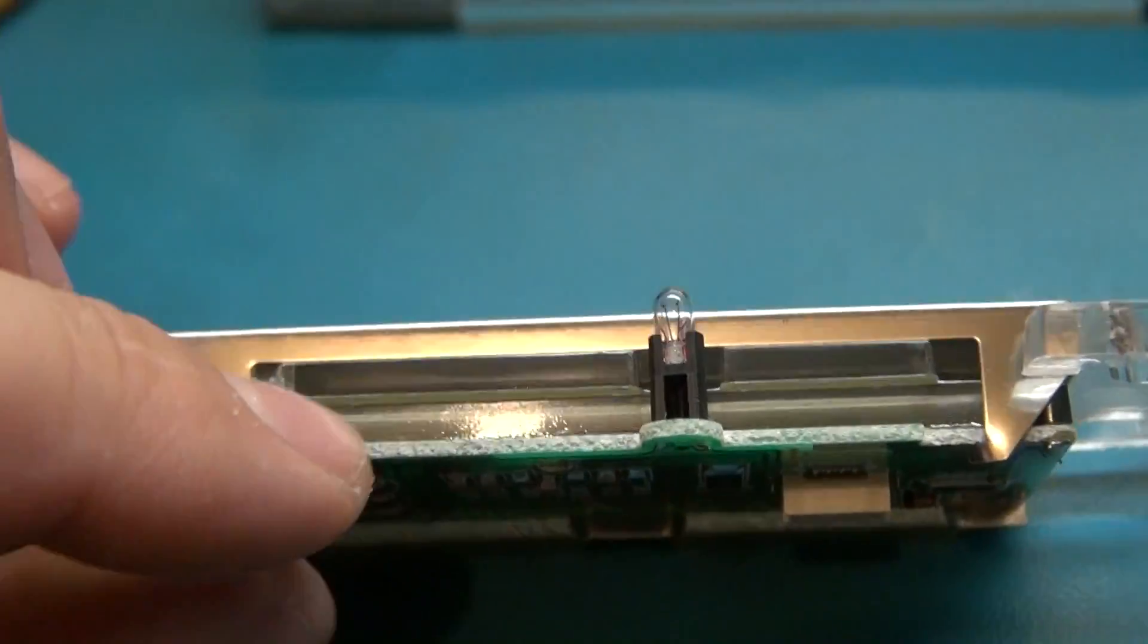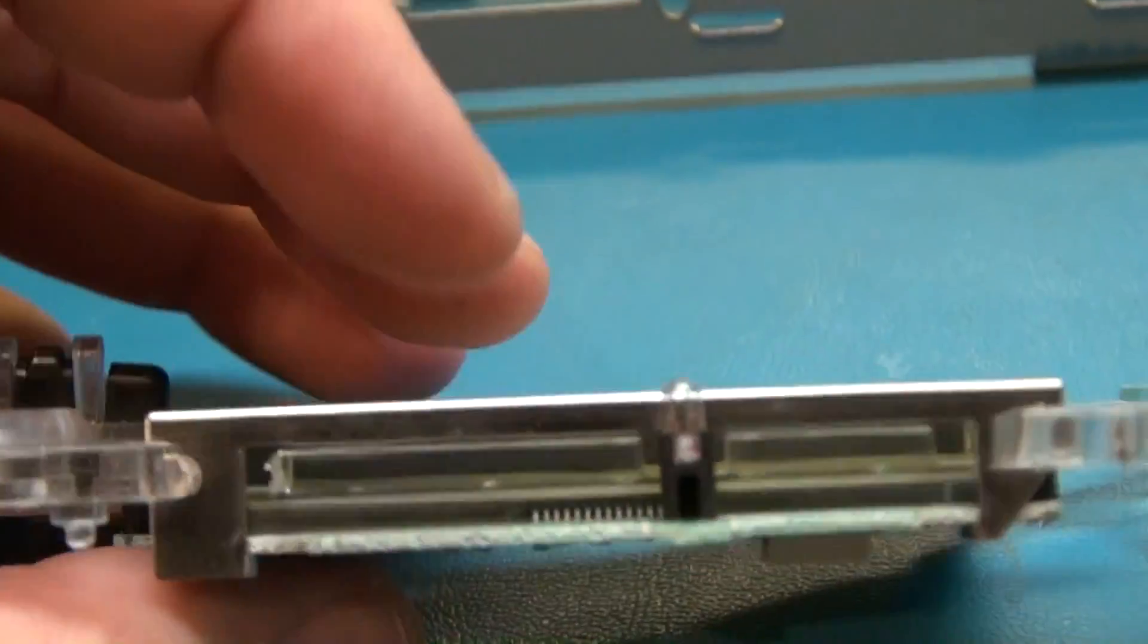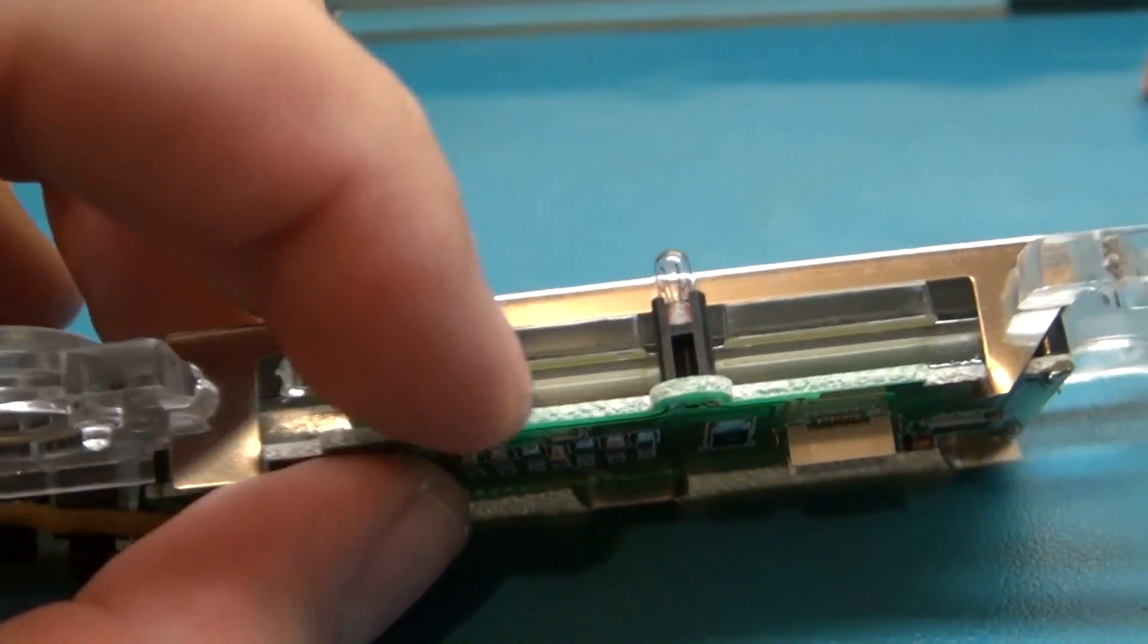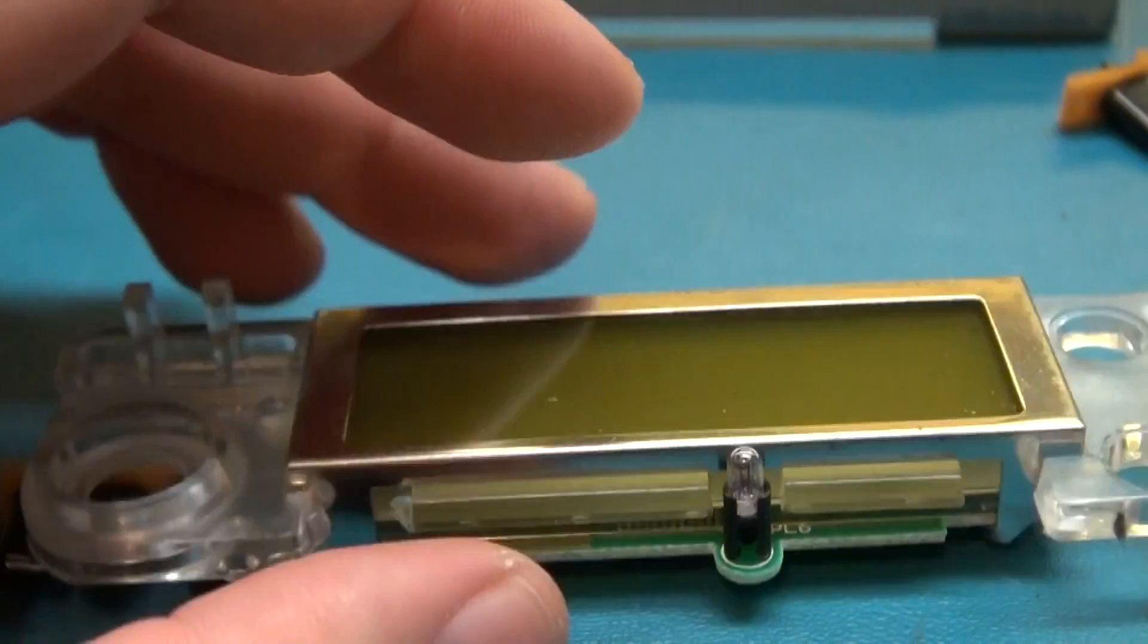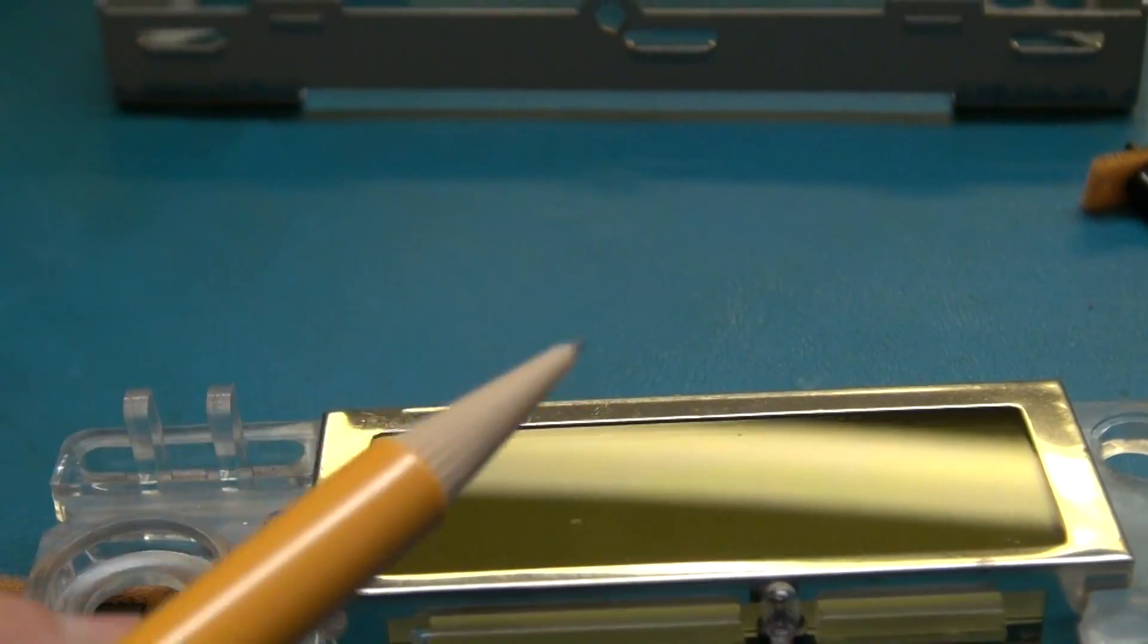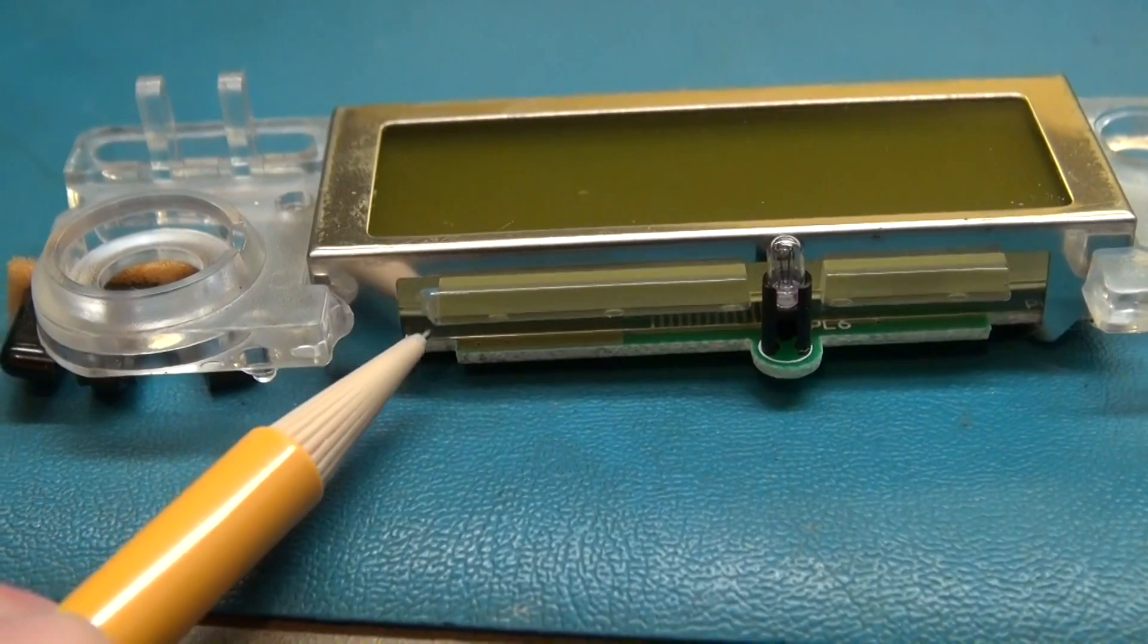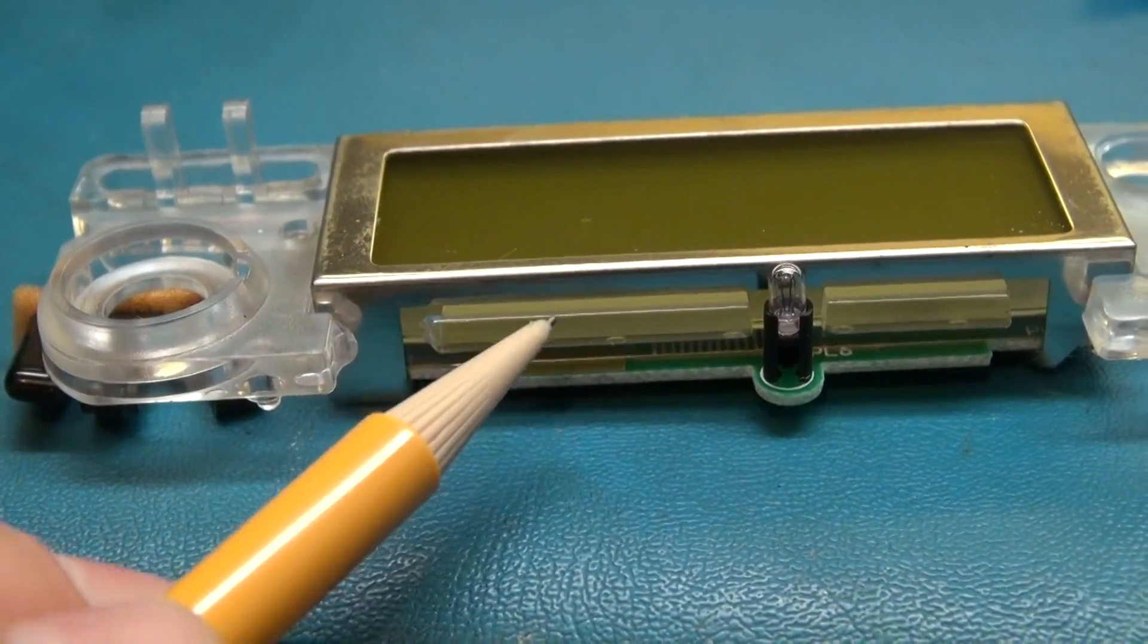So what happens is there's a set of rubber conductors, like two rubber strips on top and bottom that the LCD sits on. They basically have little stripes in them inside the strips, so basically they transmit signals between the LCD and the main board.